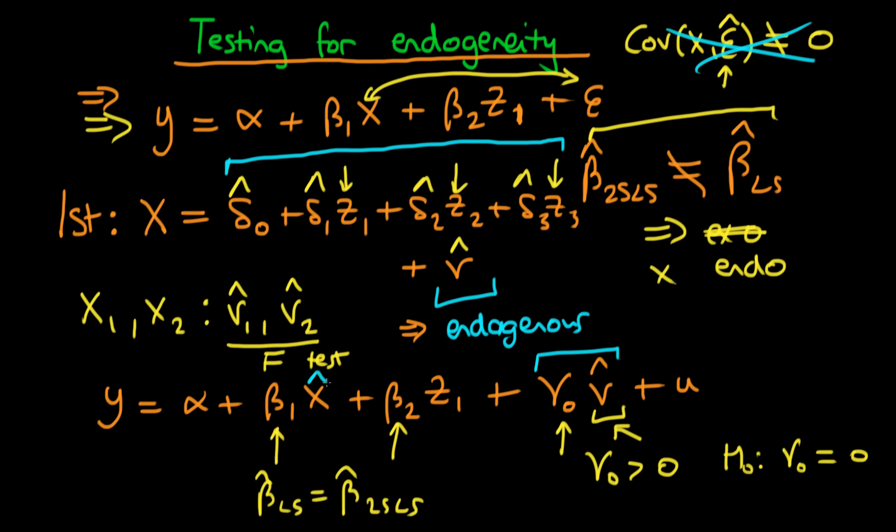just like we're doing in two stage least squares, we are taking into account this endogenous part of x, and we are accounting for it explicitly in our regression. In two stage least squares, we do that by including x hat, and because x hat only contains that variance of x which is exogenous, that is okay. But here, another way of doing that is just by including all the parts of x which are endogenous.